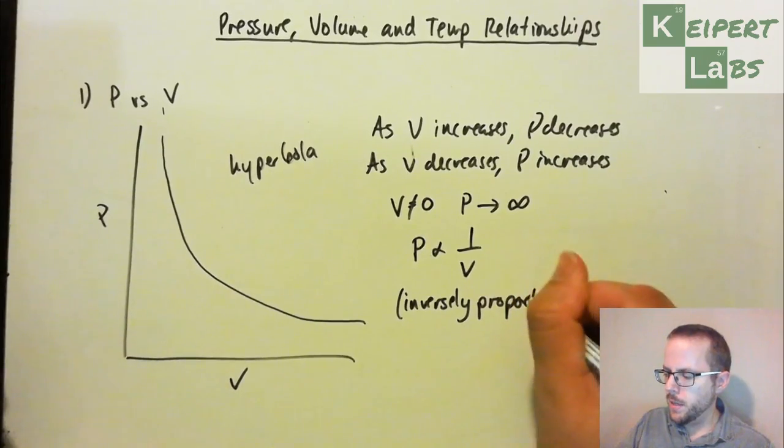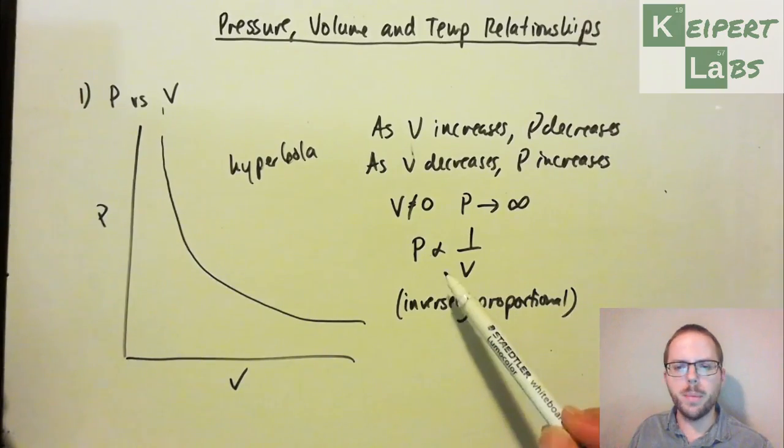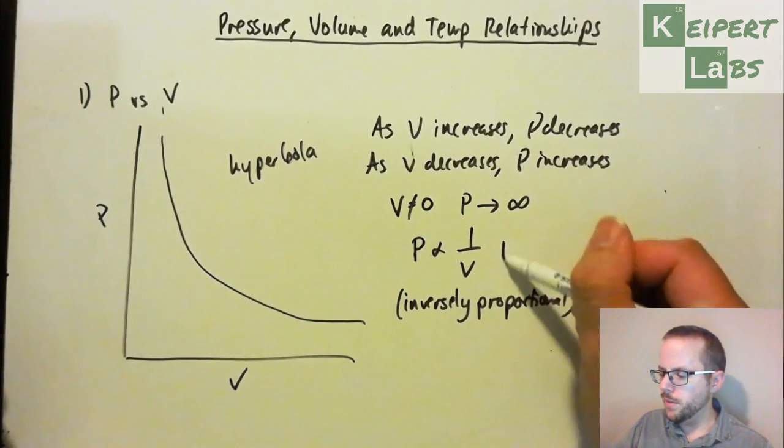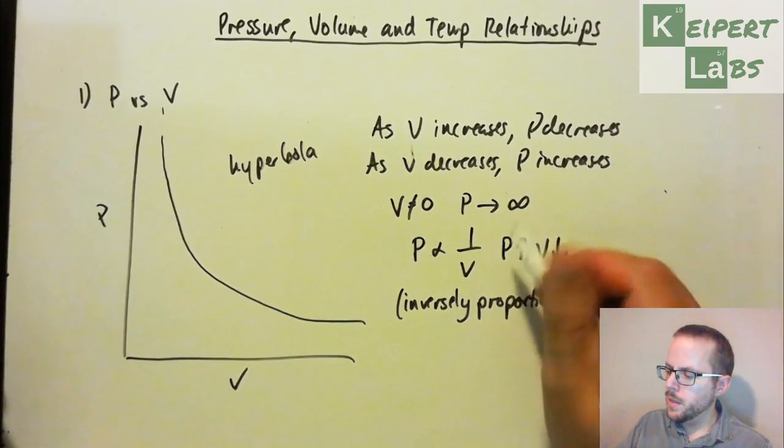Now we'll look at the explanation for that in a second. But this is mathematically just expressing that as one goes up, the other goes down. So if pressure goes up, volume goes down, or vice versa.